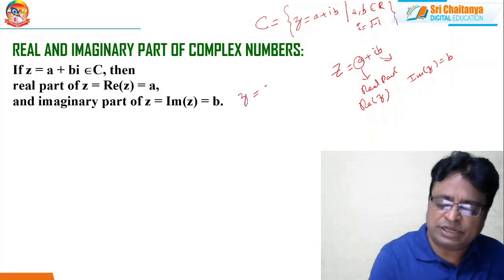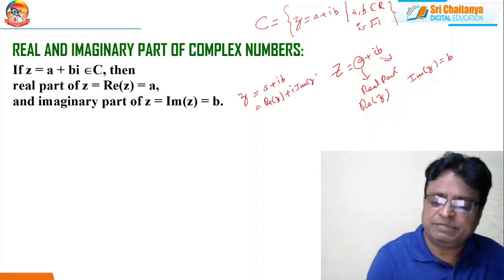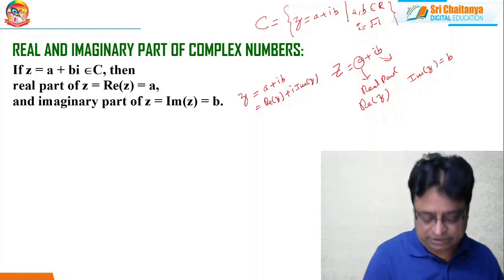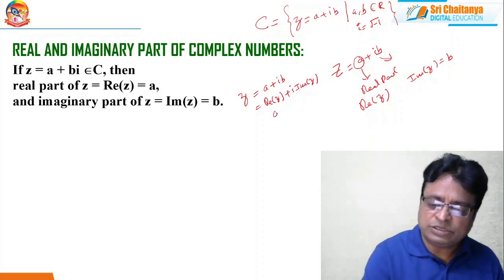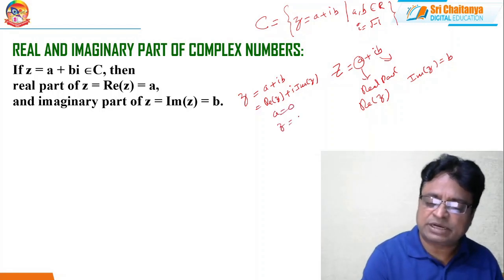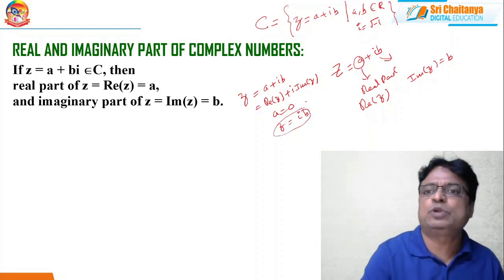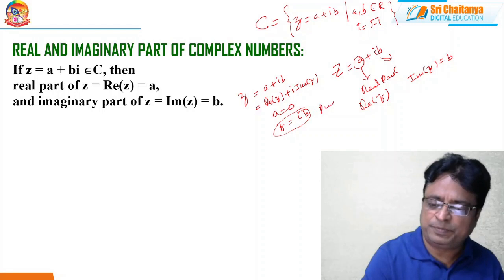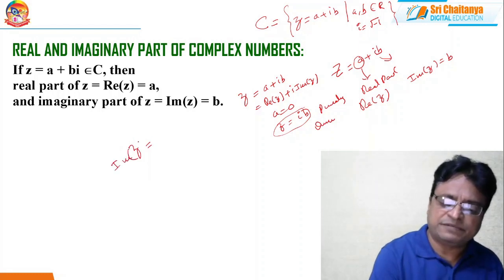So if z = a + ib, I can write this as Re(z) + i·Im(z). Im(z) means imaginary part of z and a means real part of z. If a = 0, then z is nothing but ib only. In this case, this complex number is called purely imaginary. So when can I say a complex number z is purely imaginary? When Re(z) = 0.